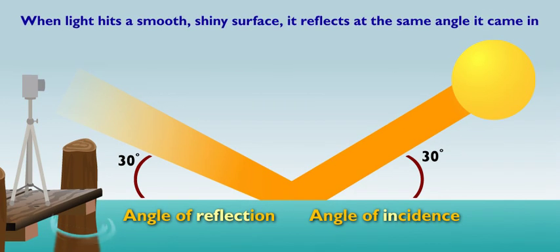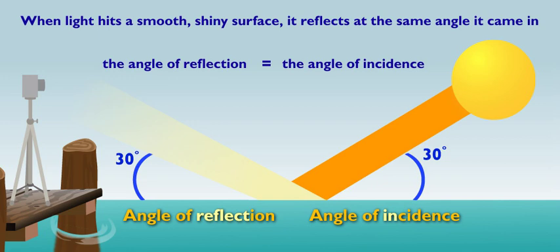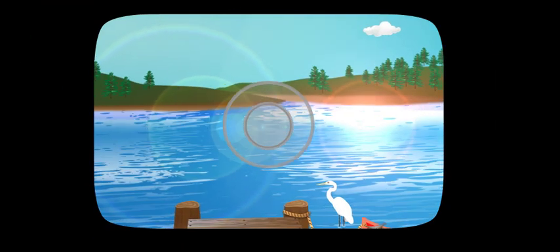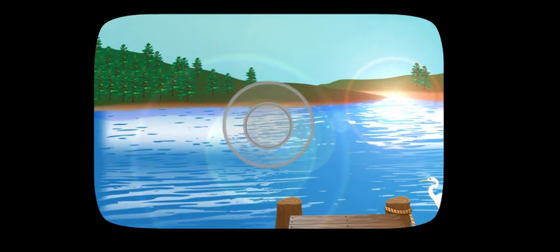So when light hits smooth, shiny surfaces like water, it reflects off at the same angle it comes in. The angle of reflection equals the angle of incidence. Gotcha. That means if we check out the angle of the rays, we can move the camera so the reflection doesn't hit us.